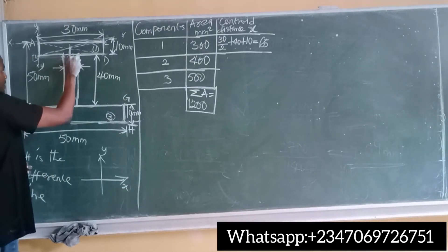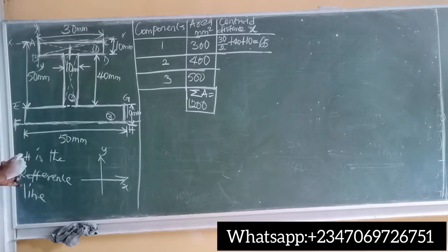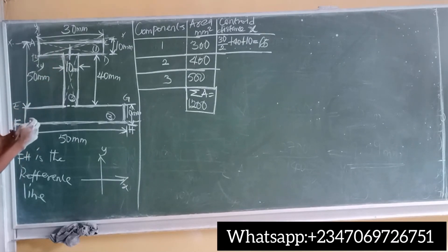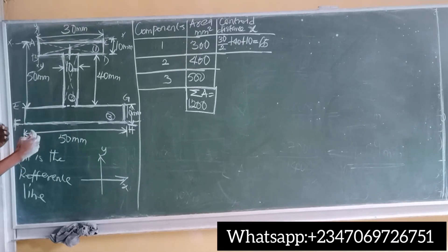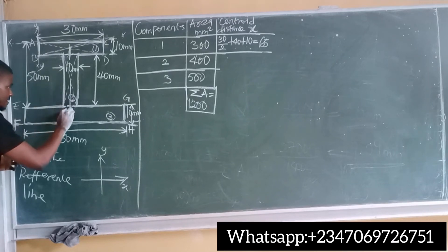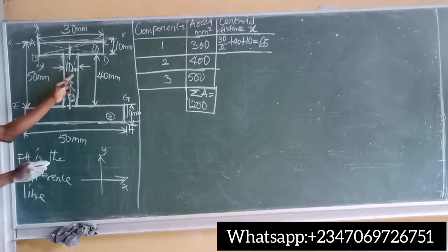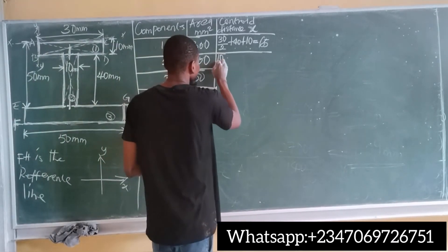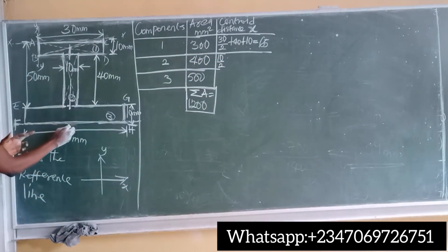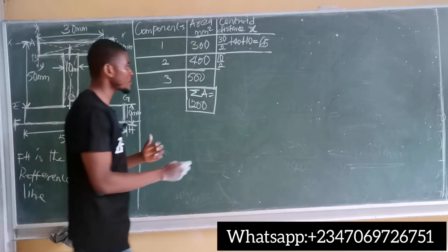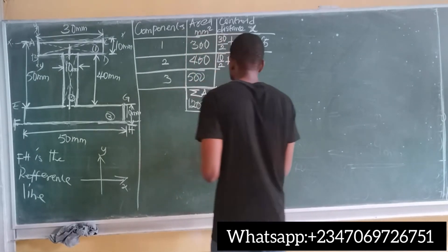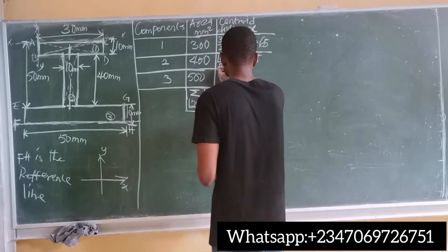For the second segment, the X-axis is the width of 10 mm. Bisect it: 10 divided by 2. Then we still need to bring it down to the reference line by adding the height of the bottom segment, which is 10 mm. So centroid distance X for segment 2 is 10 divided by 2, plus 10, giving 5 plus 10 equals 15 millimeters.